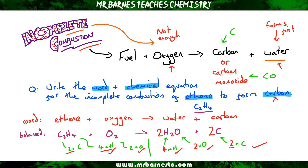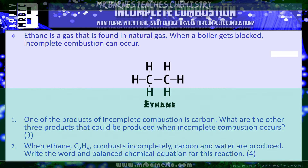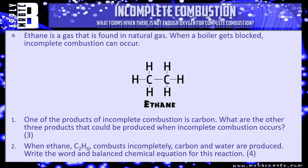And that is everything you need to know about incomplete combustion. So it's time for you to have a go. This question says: ethane is a gas found in natural gas; when a boiler gets blocked, incomplete combustion can occur. Question one: one of the products of incomplete combustion is carbon — what are the other three products that could be produced? Think about what always forms first and what the other two things are. You need all three for your three marks.